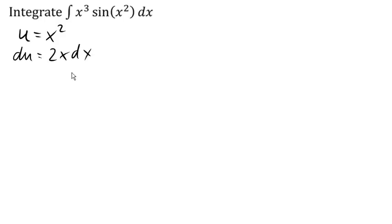And then du will be 2x dx. So dx will be du over 2x. And then we can make the substitution. And so we can say integral of x cubed sine of u. And then dx, of course, is gonna be du over 2x here.